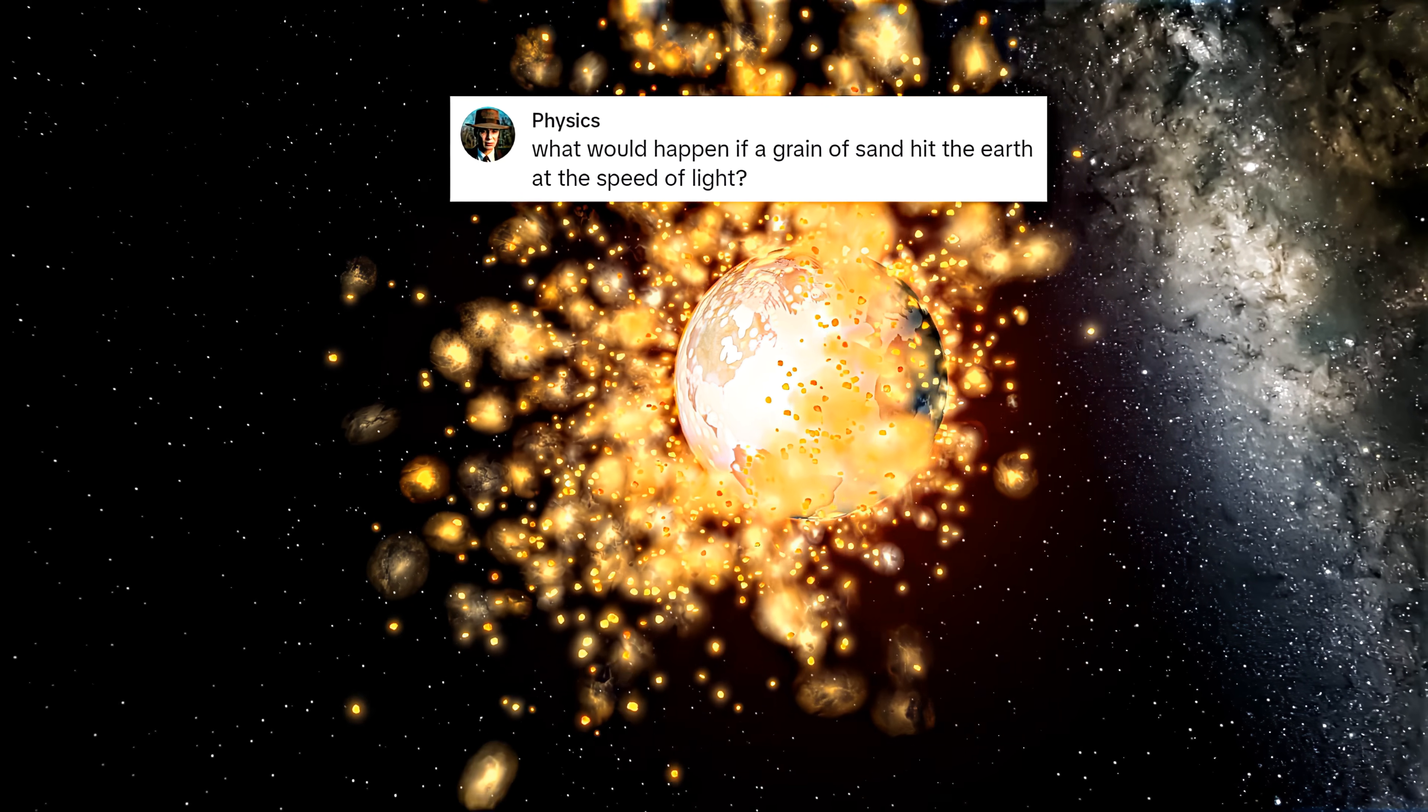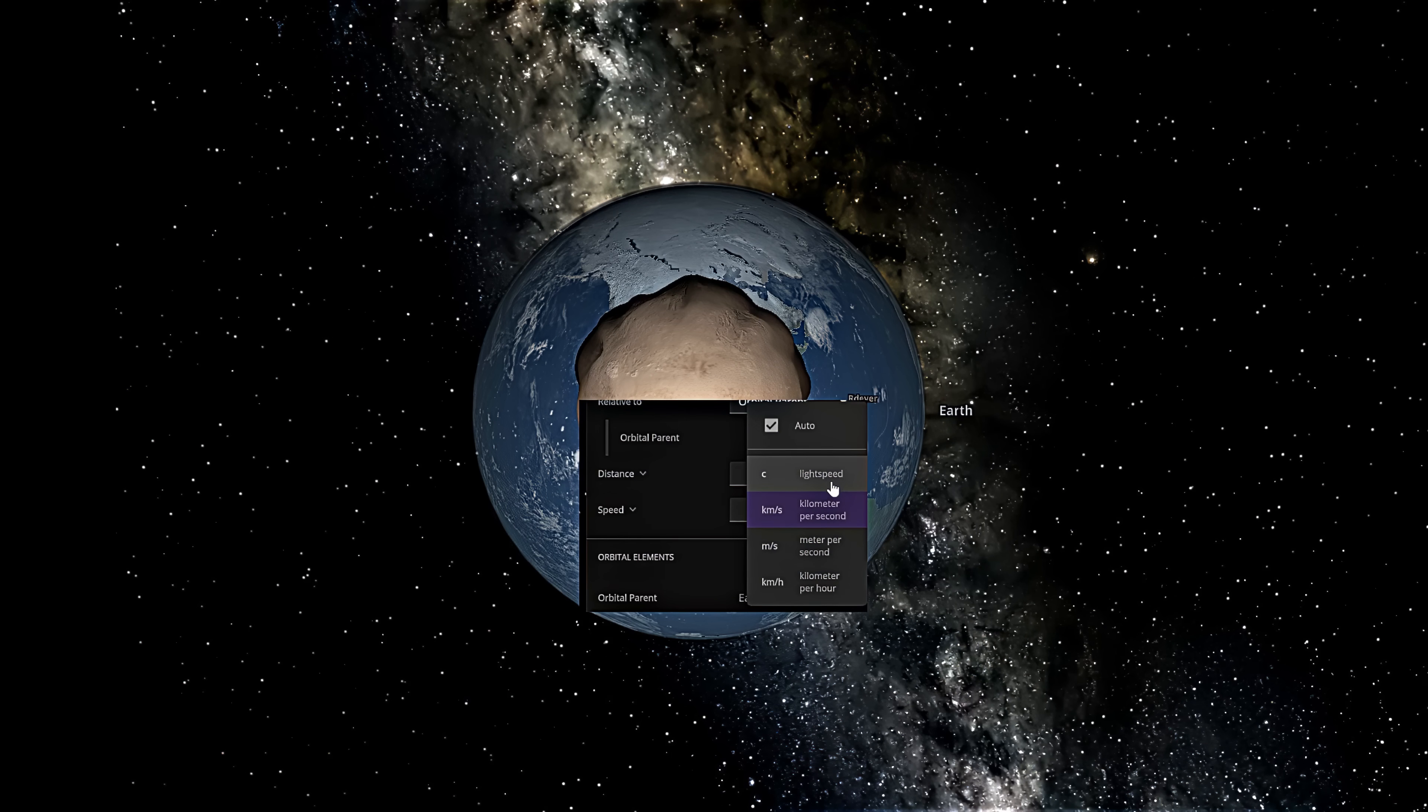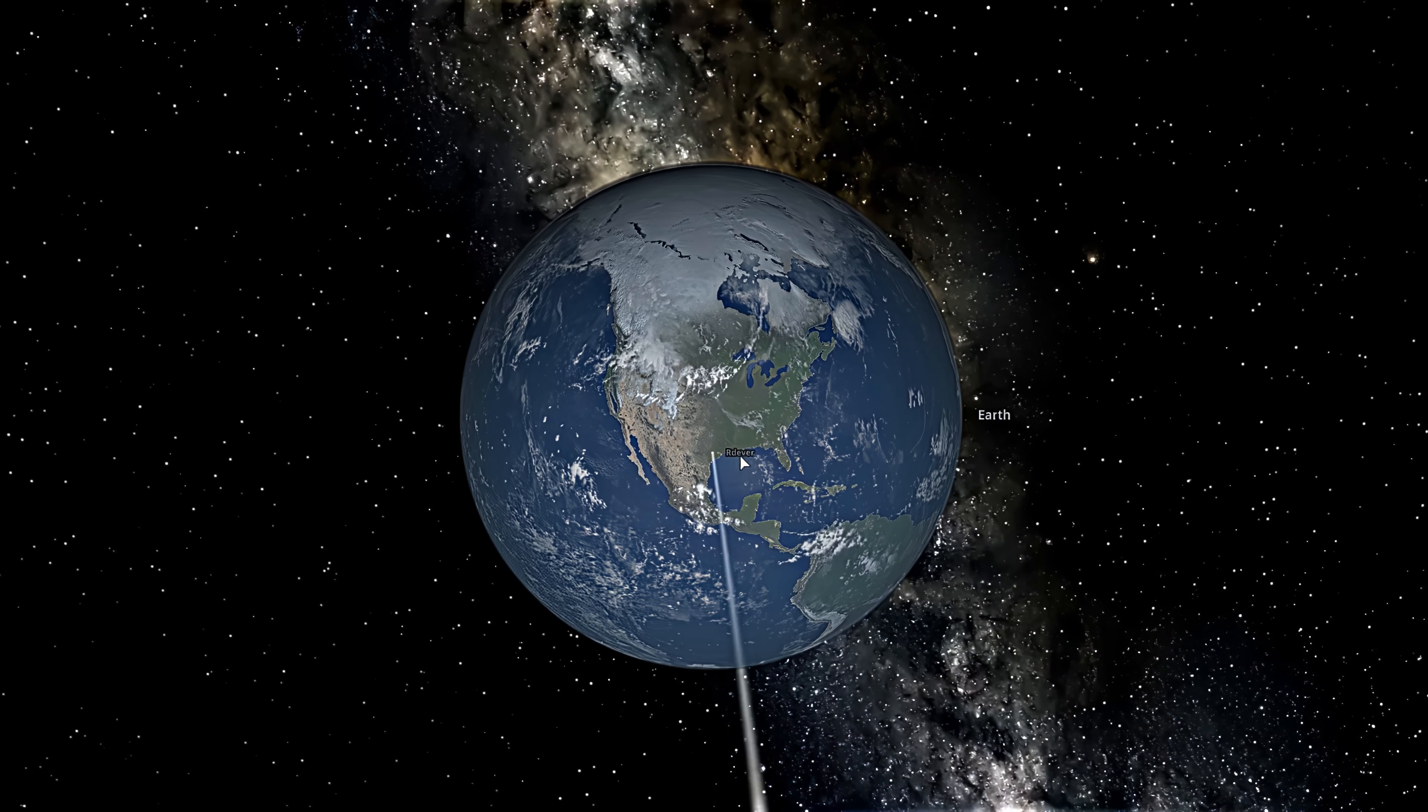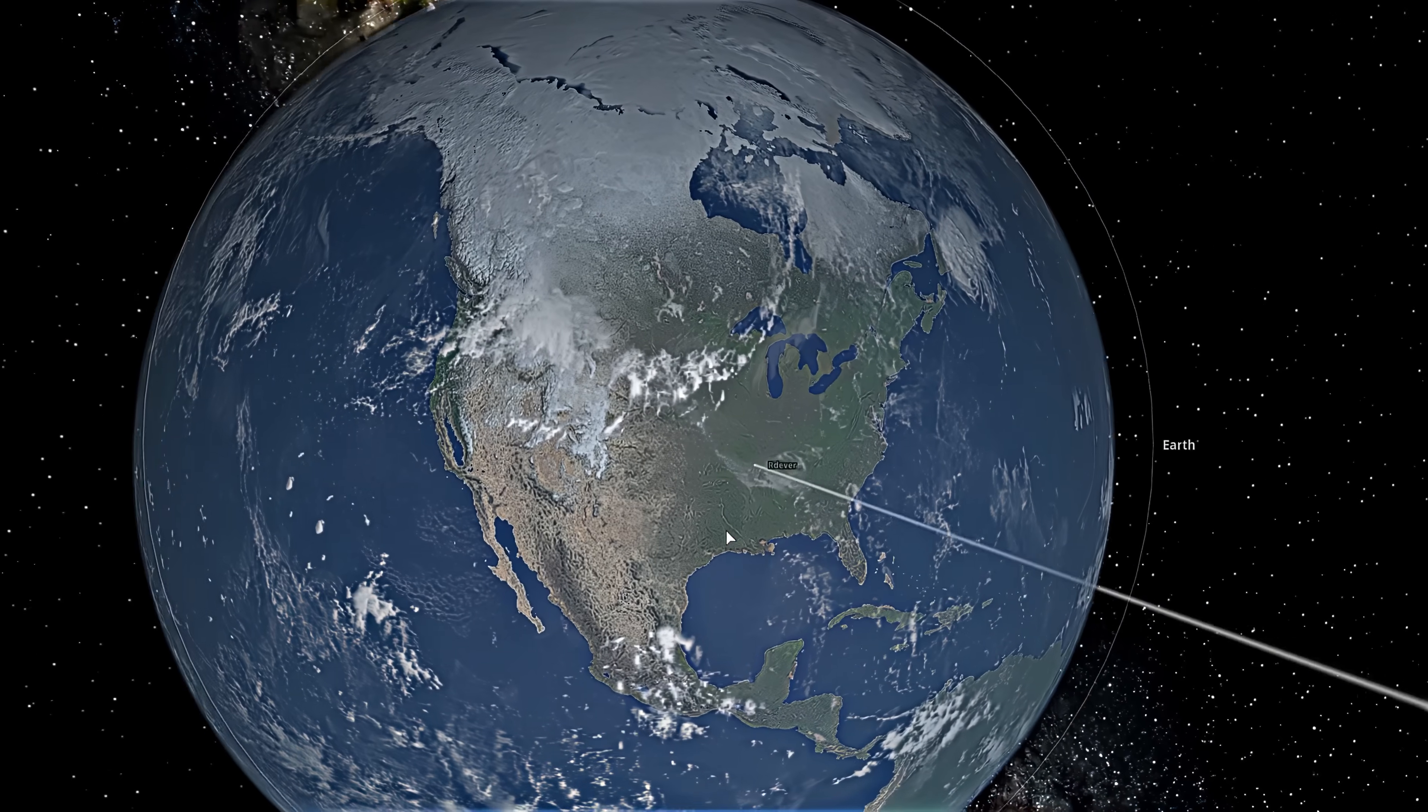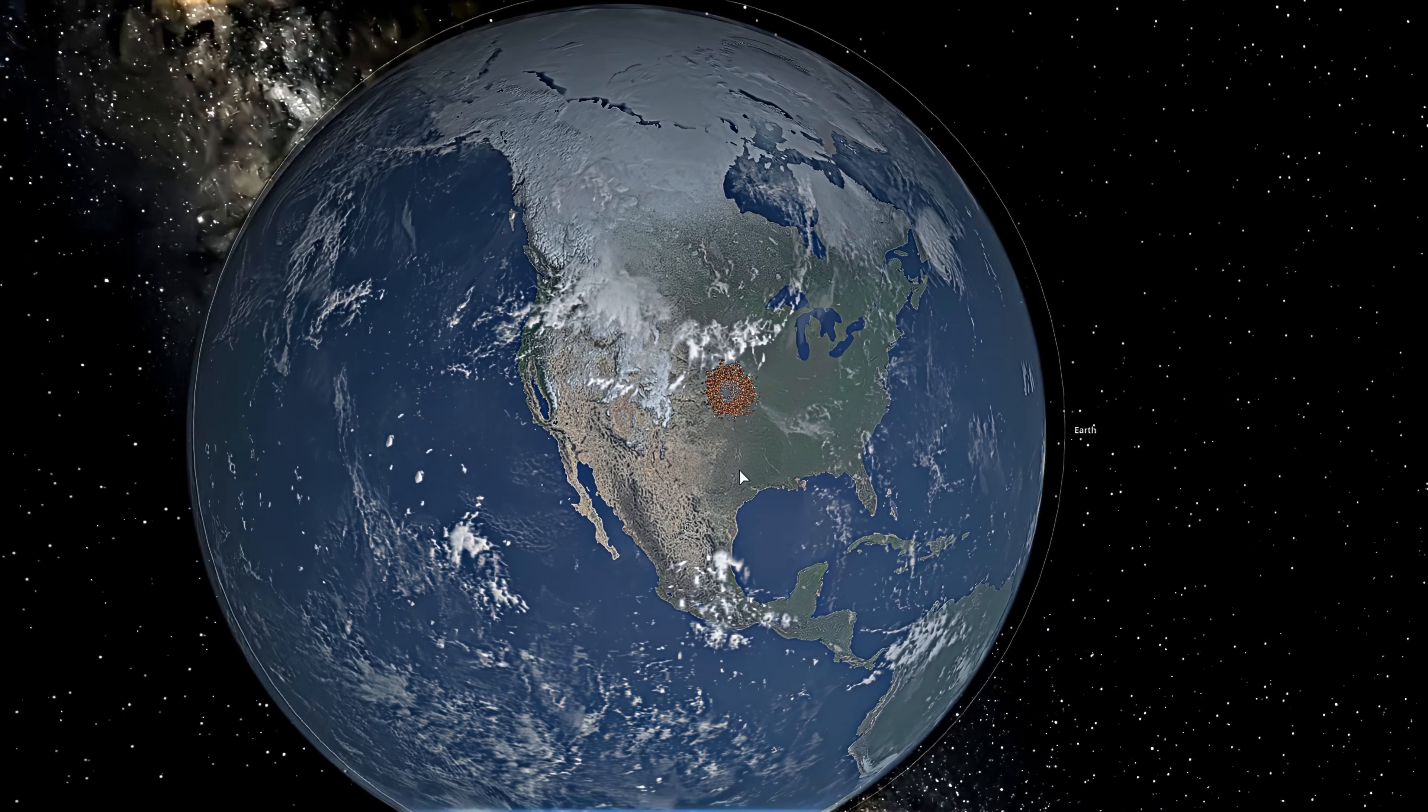What happened if a grain of sand hit the Earth at the speed of light? Let's take an asteroid and change its radius to 2 millimeters and set it to the speed of light. And there goes the grain of sand. It's so small you can barely see it. It hit the Earth, but it doesn't seem to have caused much damage.